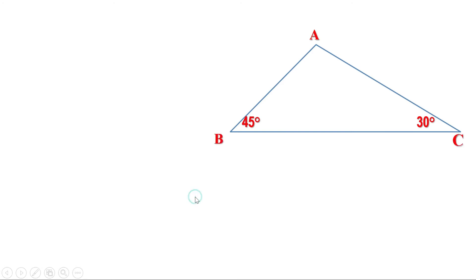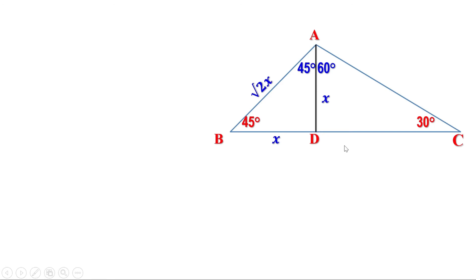Let us draw a perpendicular from A to BC, meeting at D. Now in triangle ABD: the angles are 45°, 45°, and 90°, so the ratio of sides is 1:1:√2. If BD = x, then AD = x and AB = √2·x. In triangle CDA: the angle at C is 30°, so angle D = 90° and angle A = 60°. The smallest side AD is opposite the smallest angle 30°. The ratio of sides of a 30-60-90 triangle is 1:√3:2.